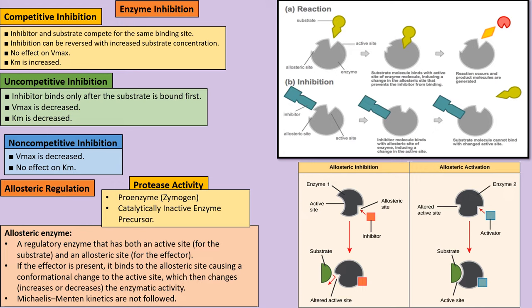Hormones use negative feedback inhibition so that too much hormone is not produced — like a brake mechanism in the body.